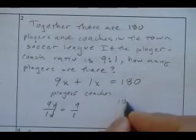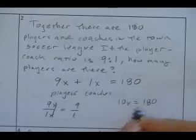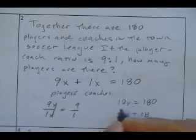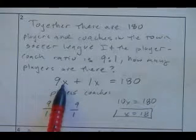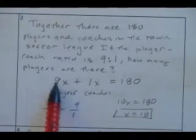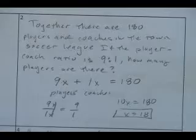Solve the equation. 10x equals 180. x is 18. So if I'm gonna find how many players there are, 18 times 9 because the number of players is 9 times whatever x is. So remember, when you solve for x, you're not done. Here we go. Let's do another one here.